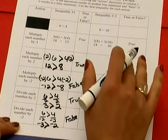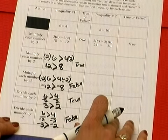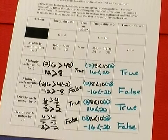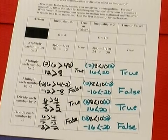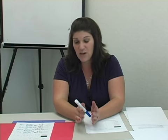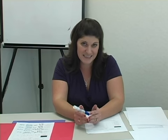Now I want you to pause this video and complete the other side of this worksheet. You should have noticed that any time you're multiplying or dividing by a negative number, our answer is coming out false. In order to make this a true answer, we have to reverse the sign. That's a key concept when dealing with inequalities: when we multiply or divide by a negative integer, you have to reverse the sign.